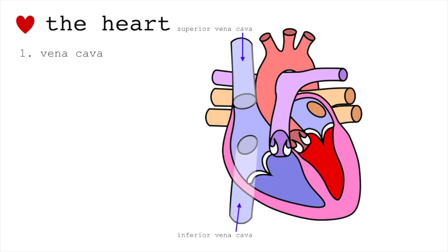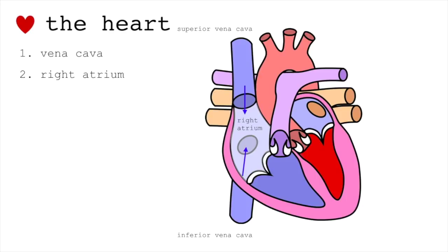Superior means higher; inferior means lower — so inferior doesn't mean less important. They're both very important in traveling the blood. And then it goes to the right atrium. It's still deoxygenated blood. We call it the right atrium because when we see diagrams of the body, it's standard to show our mirror reflection. So pretend the body is right in front of you, facing you, across from you.